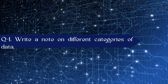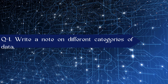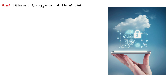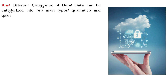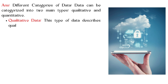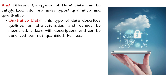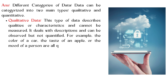Write a note on different categories of data. Data can be categorized into two main types: qualitative and quantitative. Qualitative data describes qualities or characteristics and cannot be measured. It deals with descriptions and can be observed but not quantified.